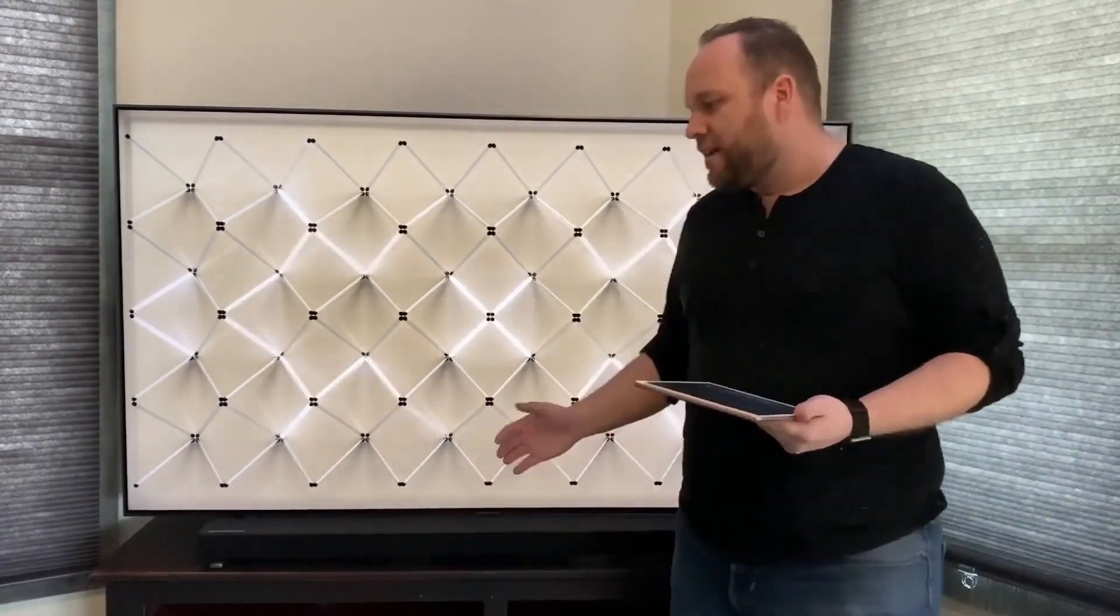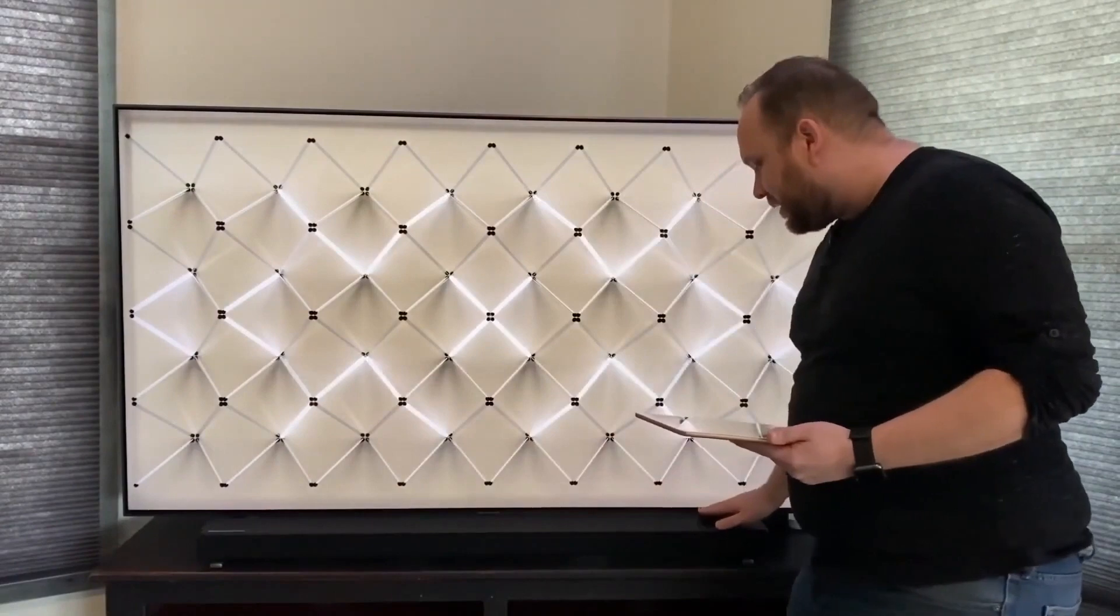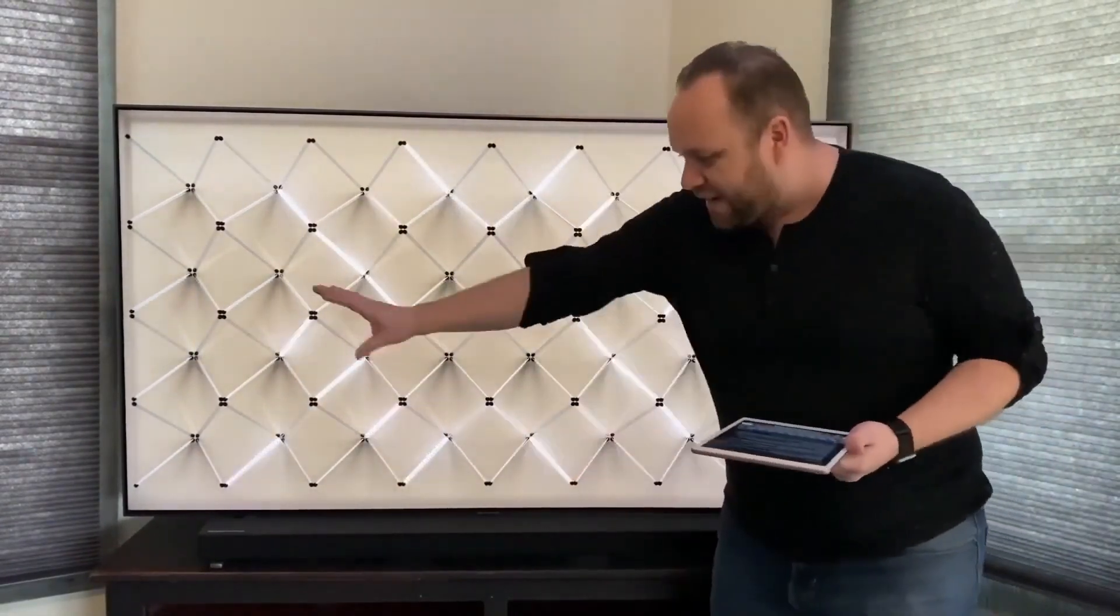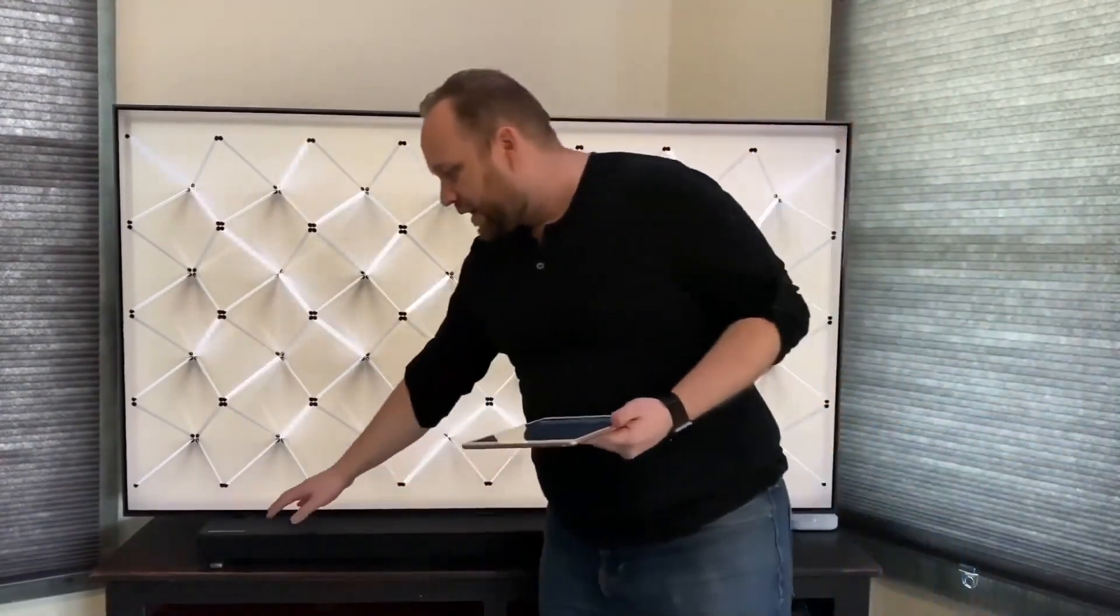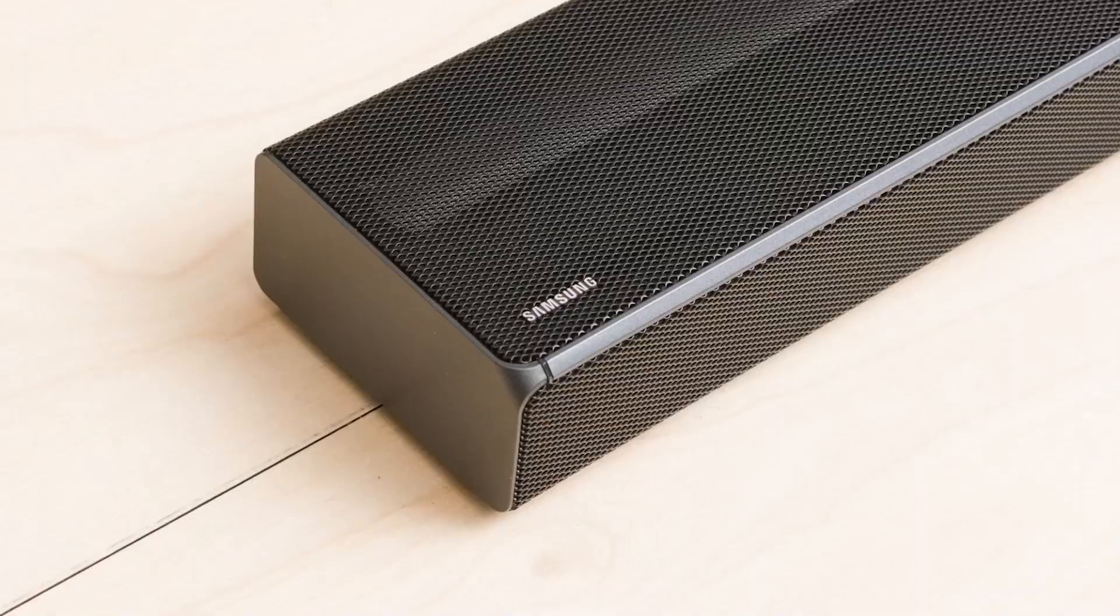The way that Samsung designed this is to pair up with their television. So as you can see, it does not go up above the screen any. That's kind of nice to give it that clean look. And it's got the branding on the top here that says Samsung, but it's black metal, real sleek looking.